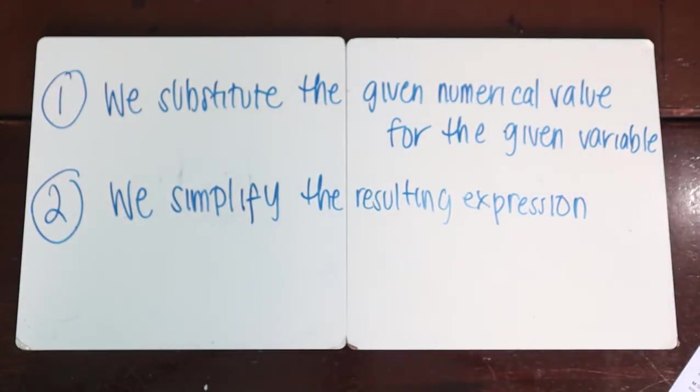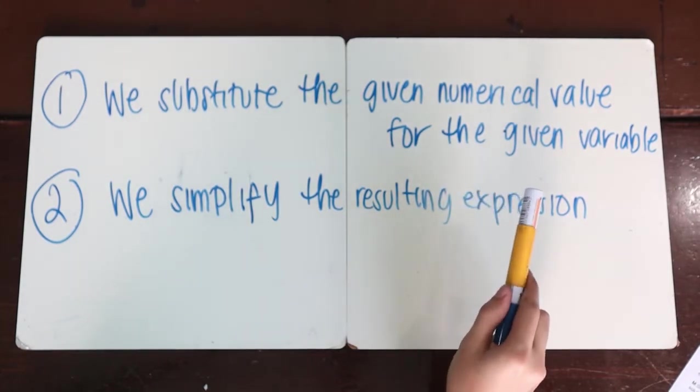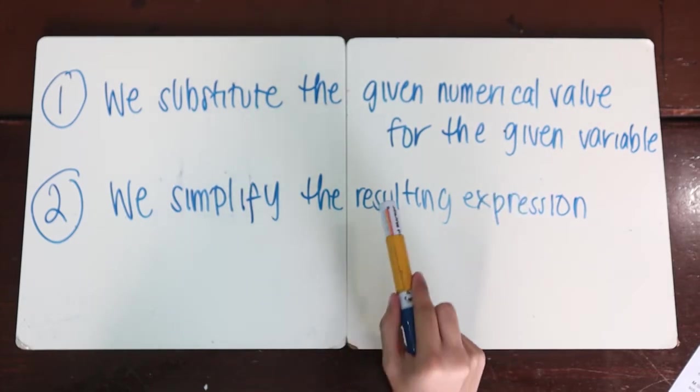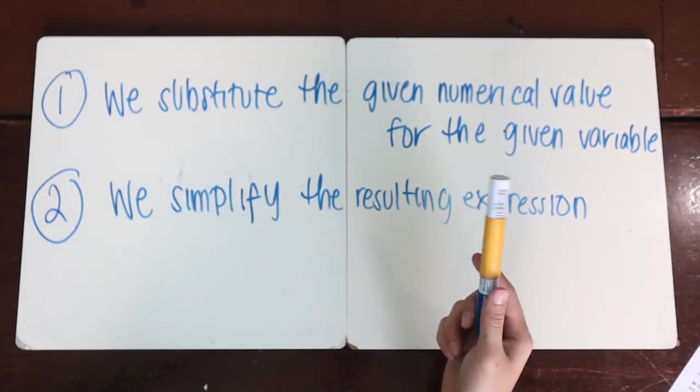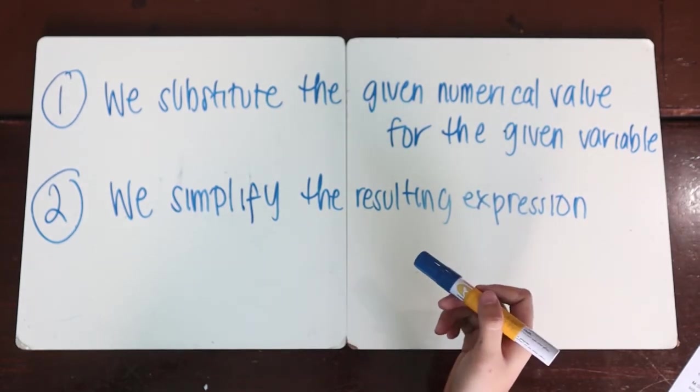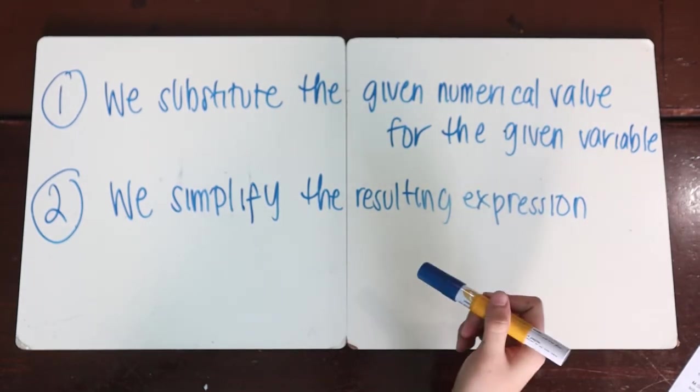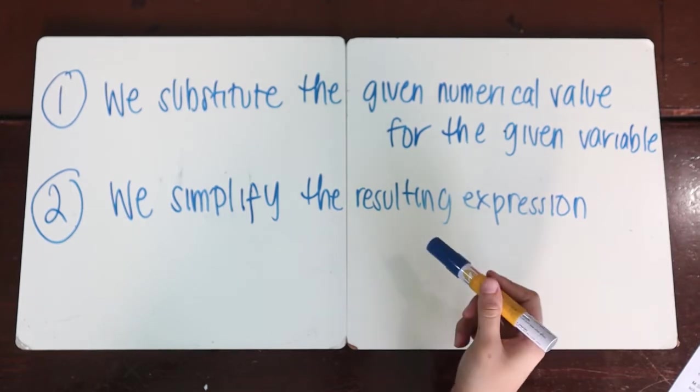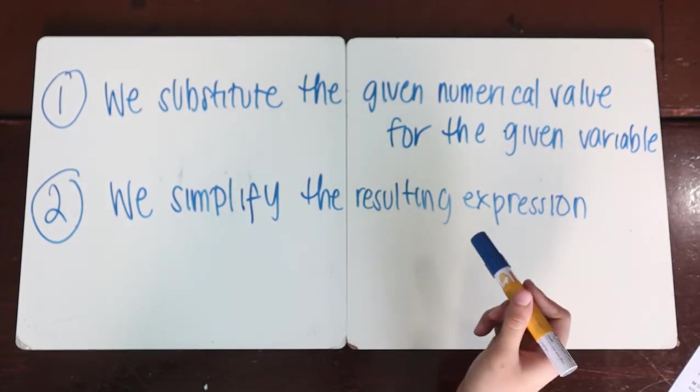Like algebra expressions, functions can also be evaluated. When we say evaluated, it means solving for the numerical value of each given function. The process for evaluating algebra expressions will be applied, wherein we substitute the given numerical value for each given variable and simplify the resulting expression. Evaluating functions means finding the value of f(x), or y, that corresponds to the given value of x. To do this, simply replace x variables with whatever x has been assigned.